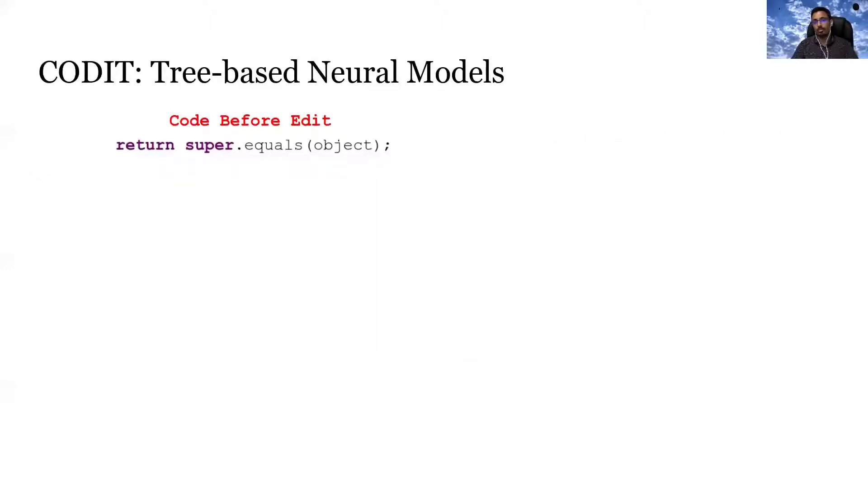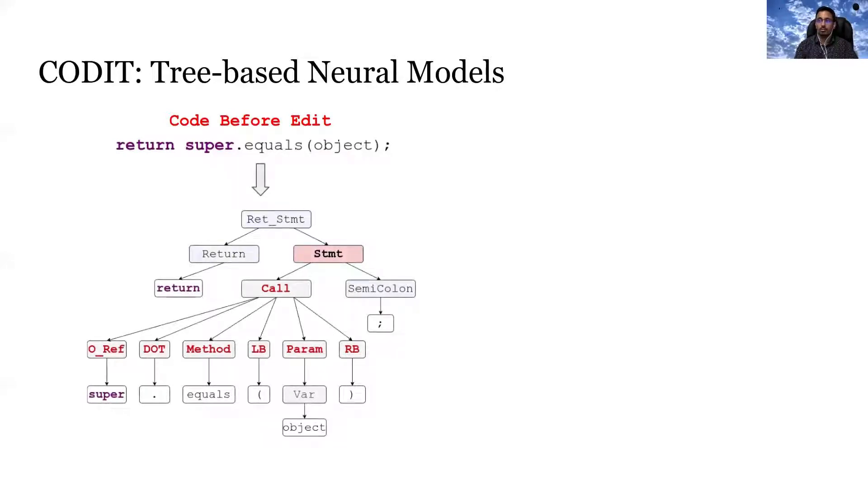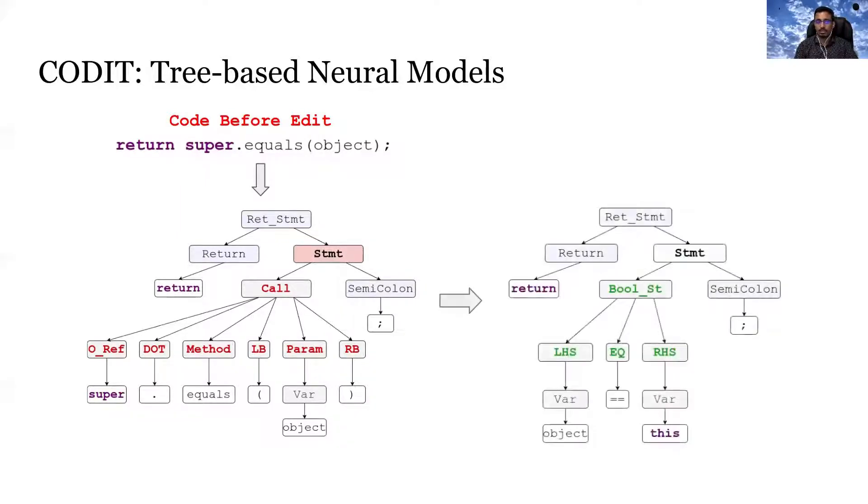And no matter how correct the system works after that, the whole edited code is practically useless. Thus, we ask this question, is it possible to edit code with guaranteed syntactic correctness? To solve this problem, we design CODIT, which is a tree-based encoder-decoder model. CODIT first extracts the syntax of the code before the edit. CODIT then translates this syntax tree to the syntax tree after the edit. And finally, CODIT translates the edited syntax tree to the edited code. By generating the syntax tree, CODIT guarantees that the edited code is syntactically correct.